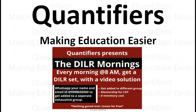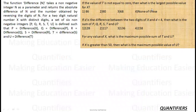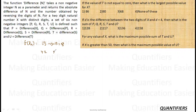Hello everyone, welcome to your favorite CAT fetch with quantifiers. In today's set of the day we are going to discuss a good set — a logical DI. If we can grab the logic, the set is doable in six to seven minutes. The function difference(n) takes a non-negative integer n as a parameter and returns the absolute difference of n and the number obtained by reversing the digits. For example, inputting 42 gives 42 minus 24, which is 18 — the absolute difference.